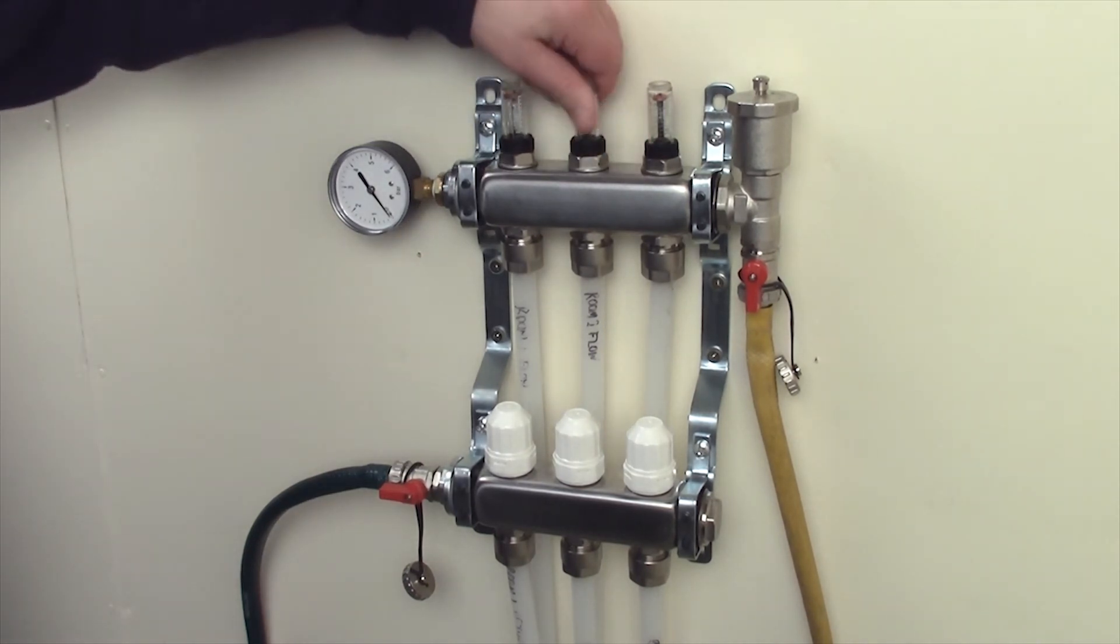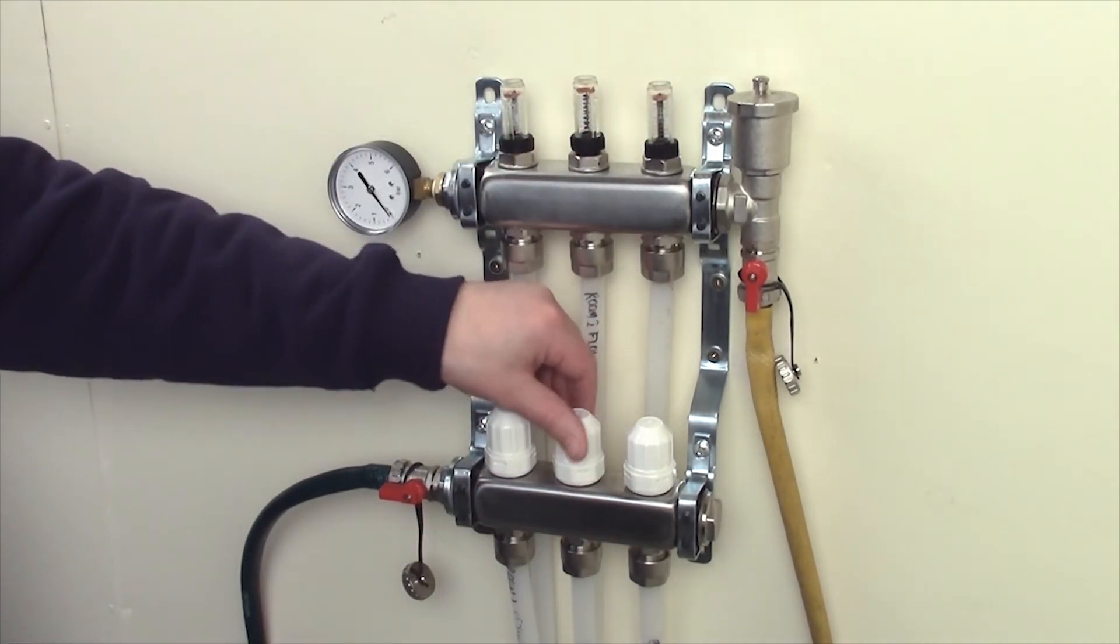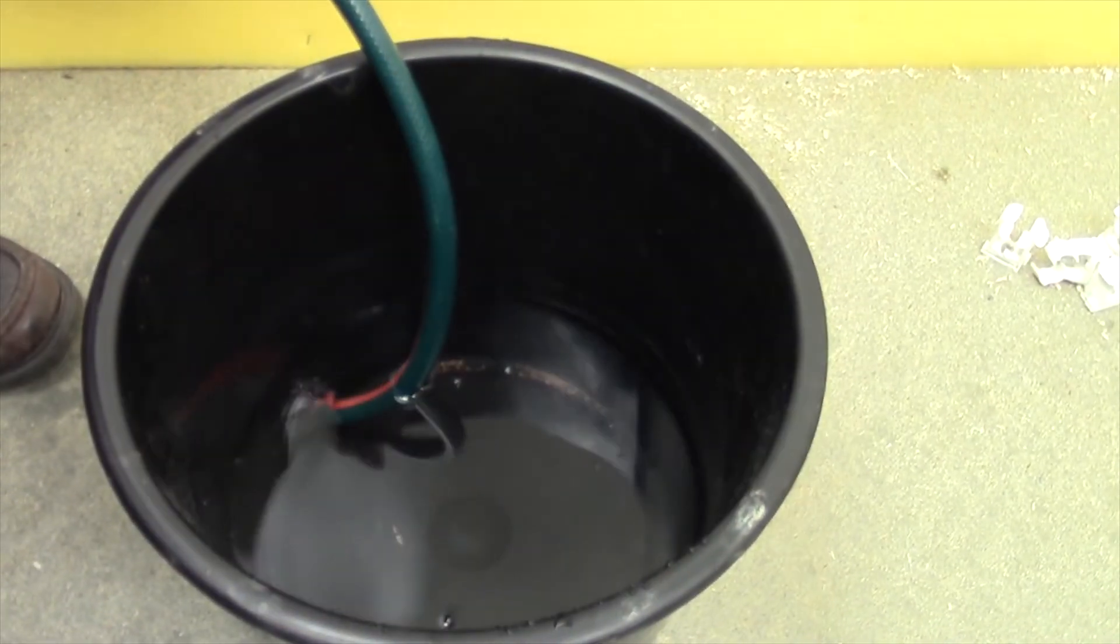Repeat this exercise for each loop of pipe, opening each flow gauge and decorators cap in turn, allowing the water to flow through the pipe purging any air as it goes.